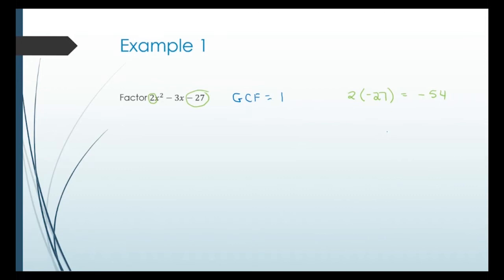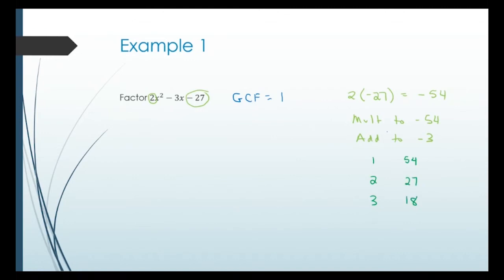Now I'm looking for two numbers that multiply to negative 54 and add to negative 3. I start writing down combinations: 1 and 54, 2 and 27, 3 and 18, and then 6 and 9. Since the last number is negative, the biggest number gets the sign of the middle. The middle is negative, so the bigger numbers are negative. Checking: 6 and negative 9 gives 6 minus 9 equals negative 3 — that works.